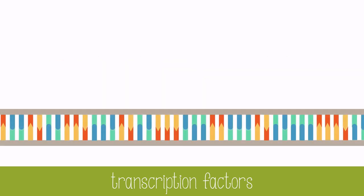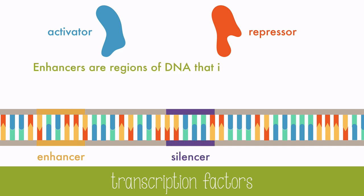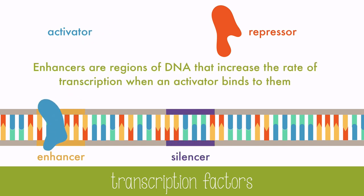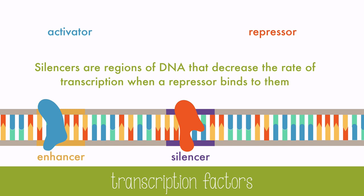Transcription factors can be activators or repressors. Along the DNA strand there are regions called enhancers and regions called silencers. Enhancers are regions of DNA that increase the rate of transcription when an activator binds to them. Silencers are regions of DNA that decrease the rate of transcription when a repressor binds to them.